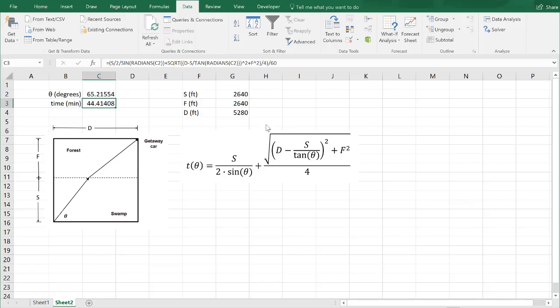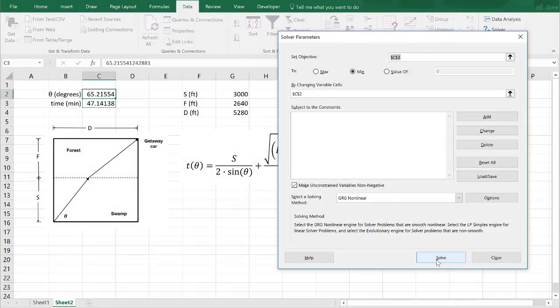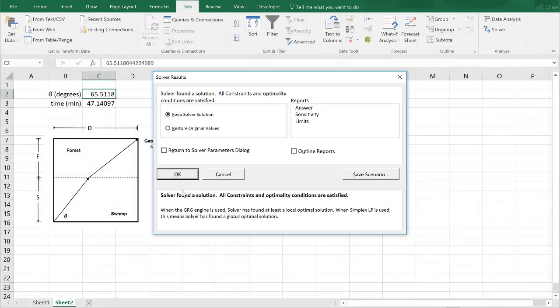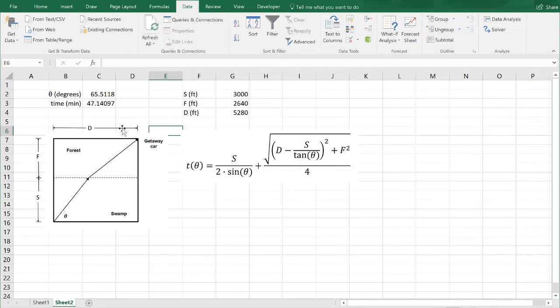But we want to make this so it's a live solution. In other words, if I change S to something like 3000, then it'll automatically change. You see that it automatically changes the time, but it doesn't automatically adjust the angle. In order for us to adjust the angle such that we minimize time, we have to go back up here into the solver tool, and we have to click solve. So this is not a live solution. And to make it a live solution, we're going to implement the golden search technique.